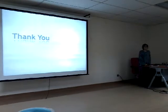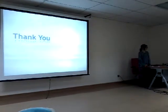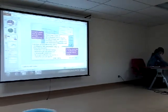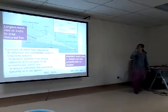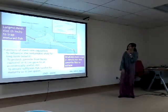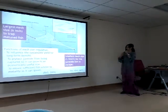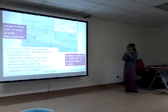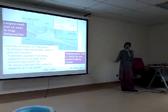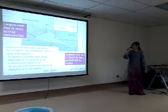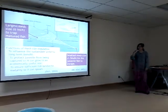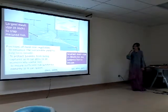Question: You mentioned in your methodology that trawl nets have meshes of different sizes. Why is that? Answer: The trawl net has different sizes — the opening has the largest mesh size of 6 inches to trap mature fish. In the codend, we have the smaller mesh size of 1.5 inches to allow juvenile fish to escape. There are three functions of mesh size regulation: to influence sustainable yield for long-term benefit, to protect juveniles from being captured so they can grow to an economically viable size, and to ensure sufficient fish survive to maturity so they can spawn, based on a 2004 reference.